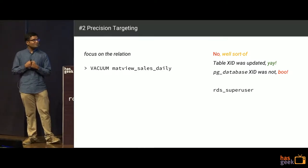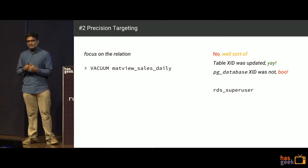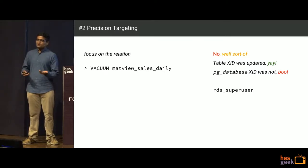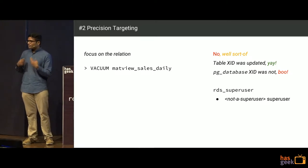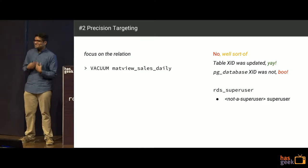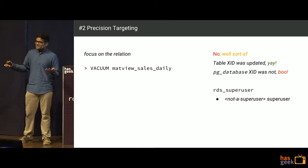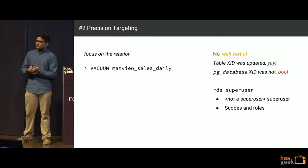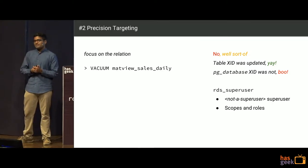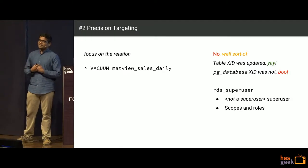It turns out this was something we did not expect. We were running on RDS, which gives you a fair amount of access to the database, but not to the underlying host or real superuser access. The role we had — rds_superuser — maybe they should have just called it 'not a superuser superuser.' The scopes and rules did not allow us to touch all the system tables. So the RDS superuser prevented us from really modifying pg_database.